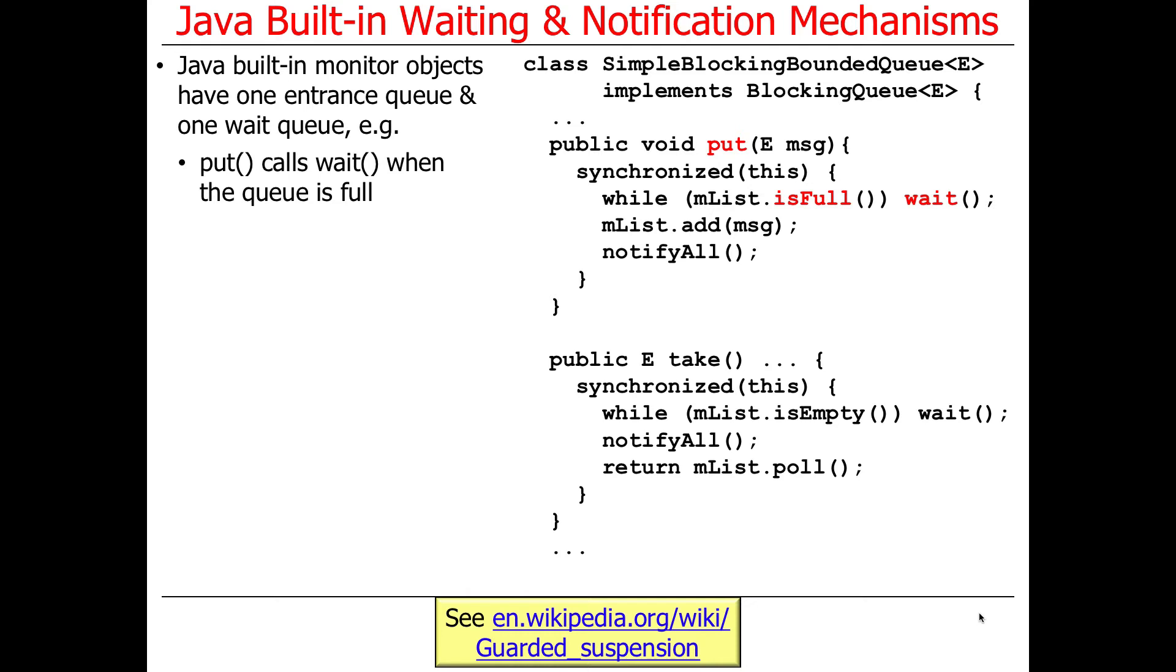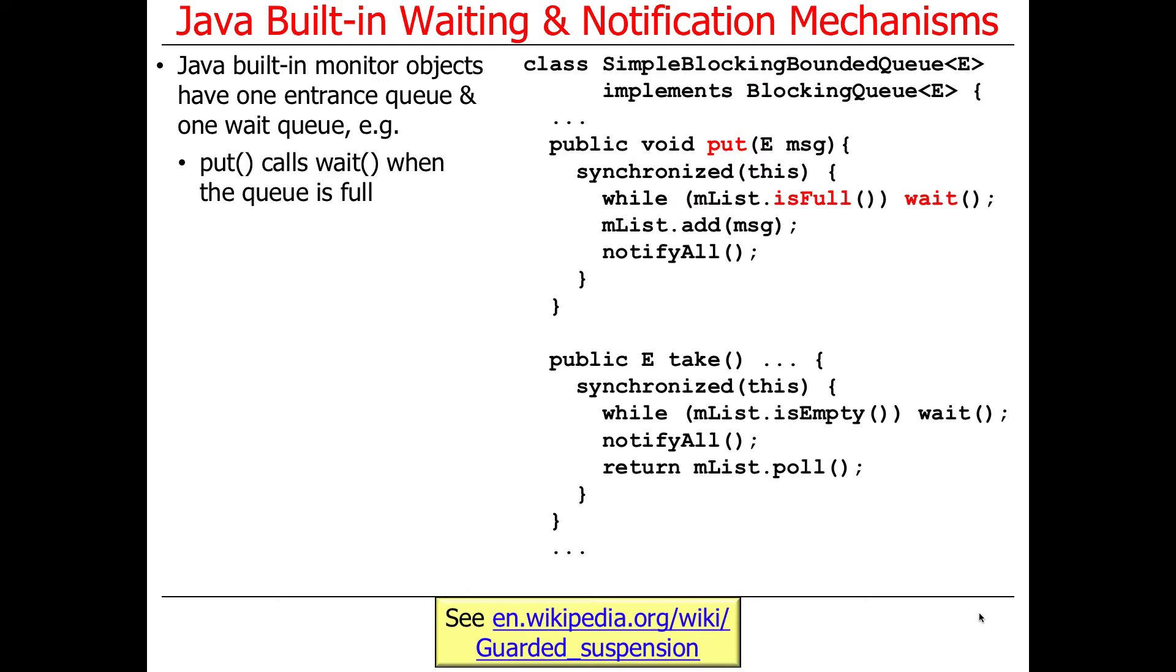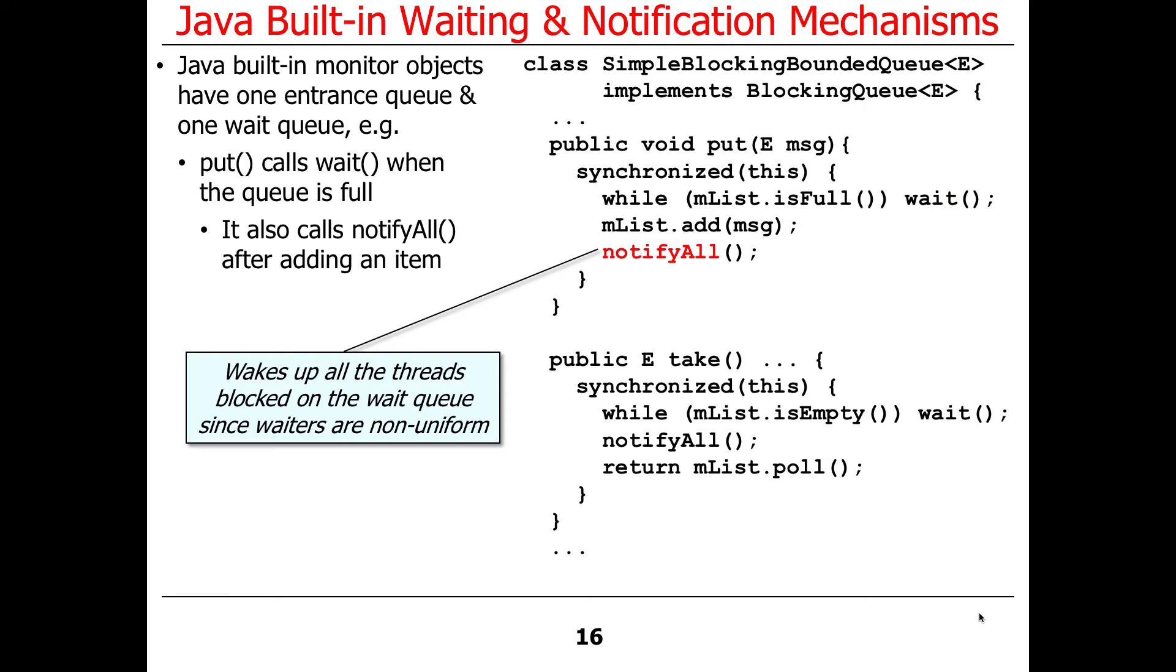Here's an example of how we could implement put and take. Put and take are the blocking methods defined in the blocking queue interface and then implemented in the simple blocking bounded queue. You can see here that we can use wait to wait while the queue is full. When you call wait here, that will atomically release the intrinsic lock, in other words the one that's this object, and it goes to sleep on the wait queue.